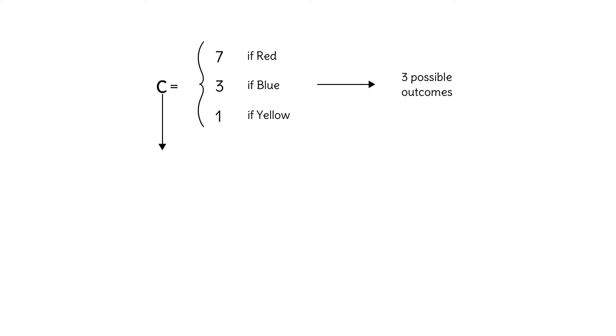C is what we call a discrete random variable. The number of outcomes is countable, and we don't have an infinite number of intermediate colors between blue and yellow to worry about.